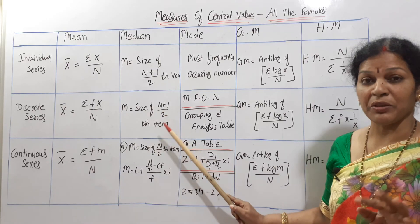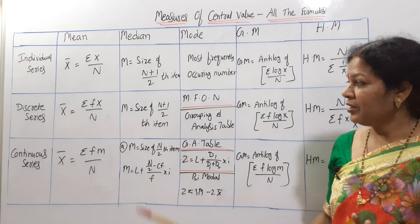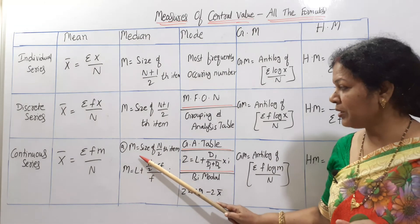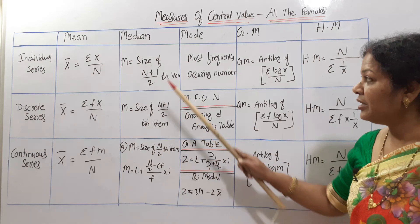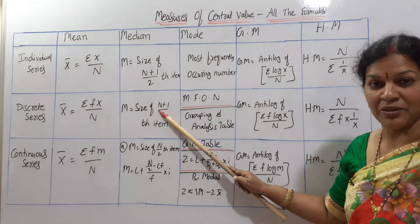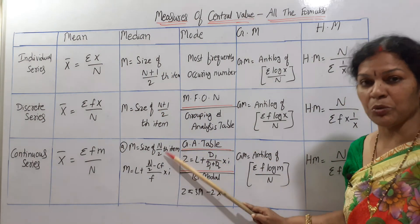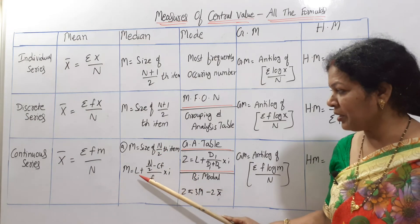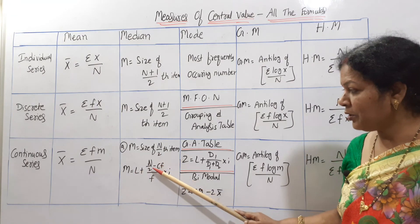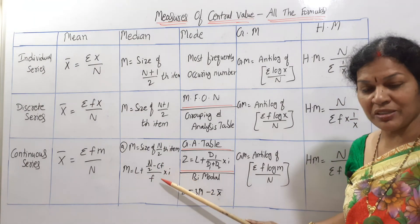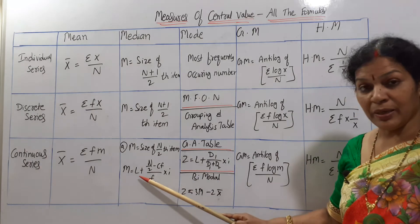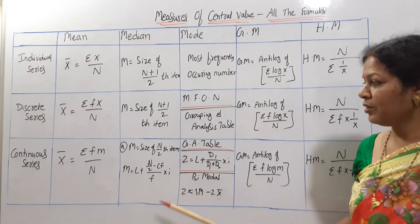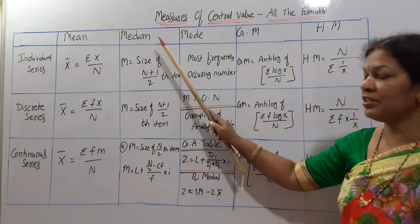The same formula applies in discrete series also — prepare cumulative frequency first, then apply median = size of (n+1)/2 th item. In continuous series there are two formulas. First: size of n/2 th item — note, here it is n/2, not (n+1)/2. Second formula: L + [(n/2 − CF) / f] × i, where CF is cumulative frequency and i is the class width.